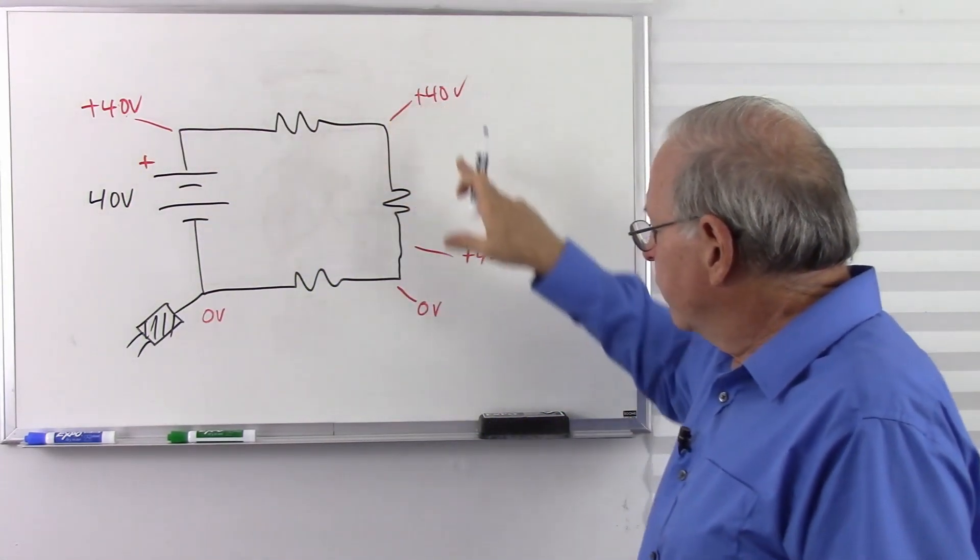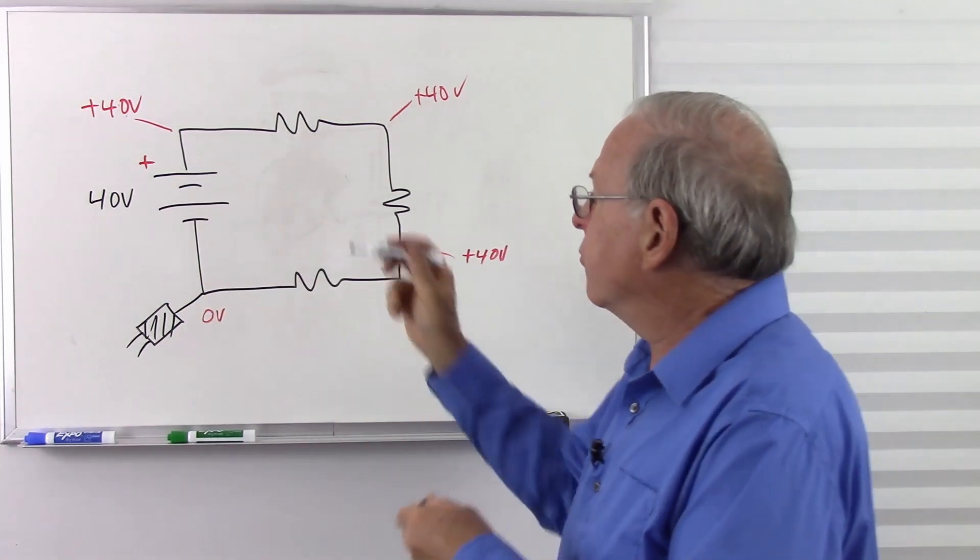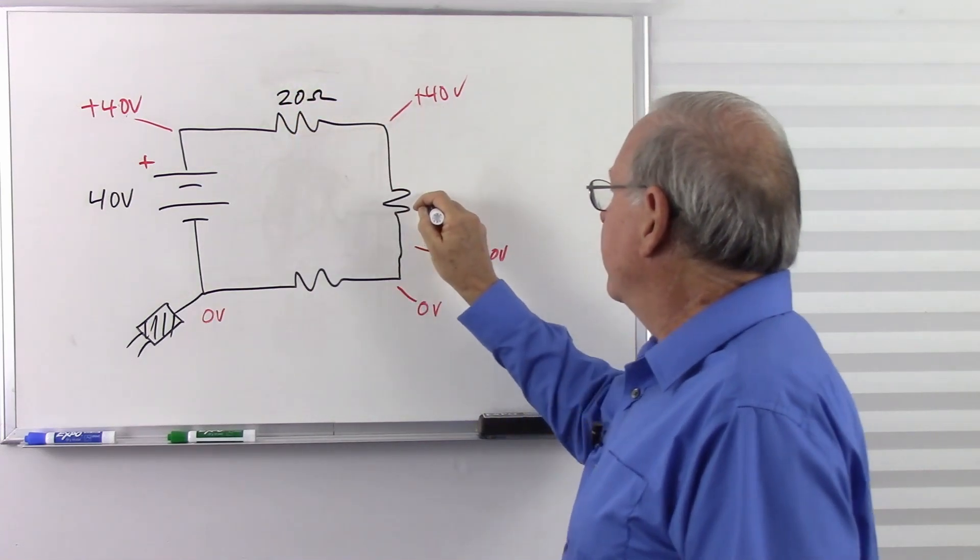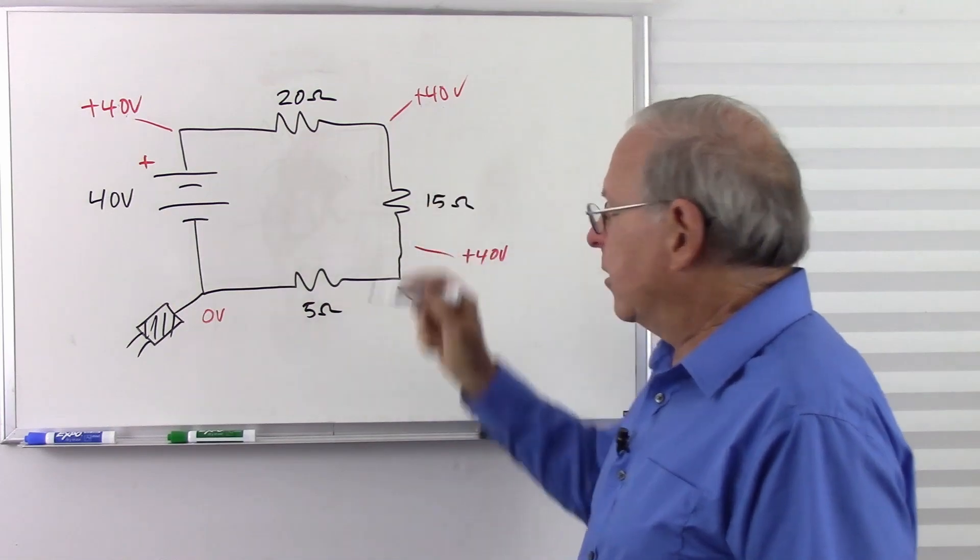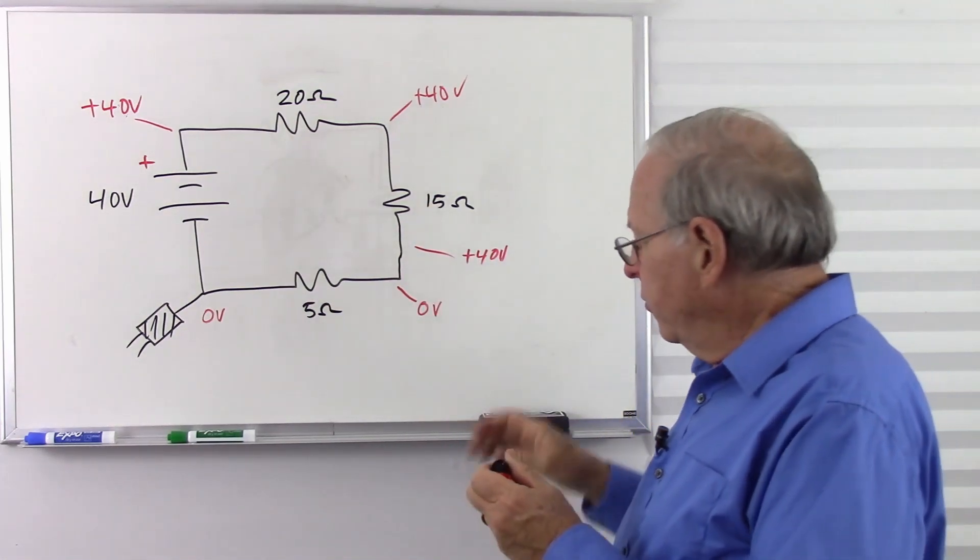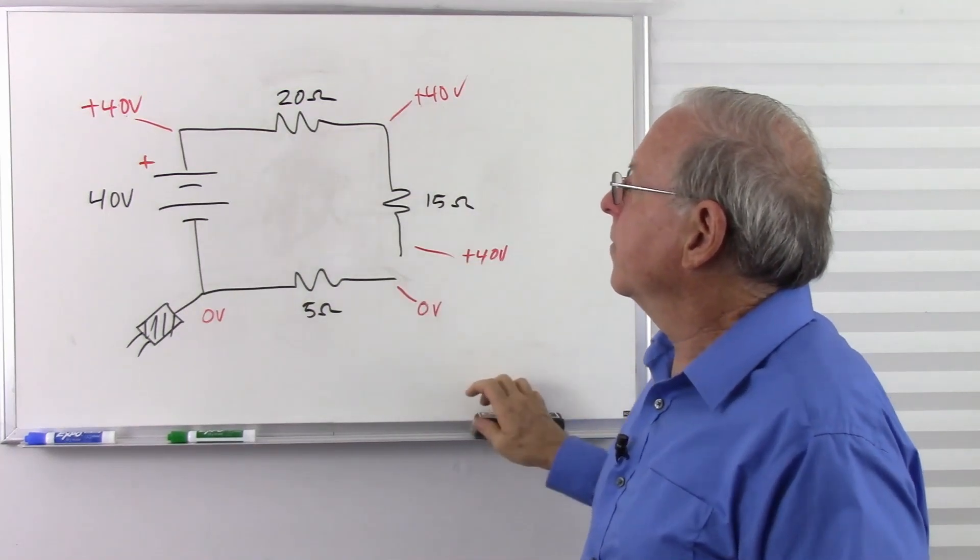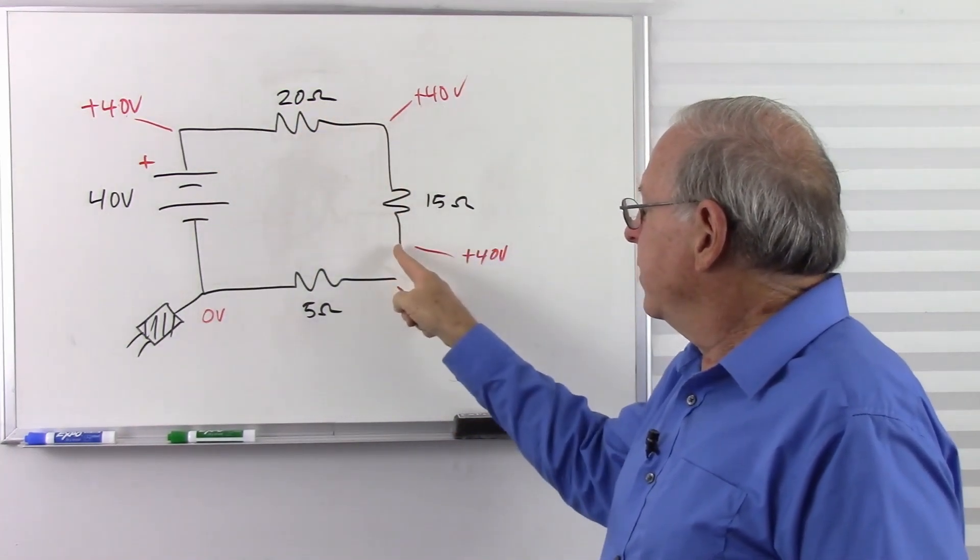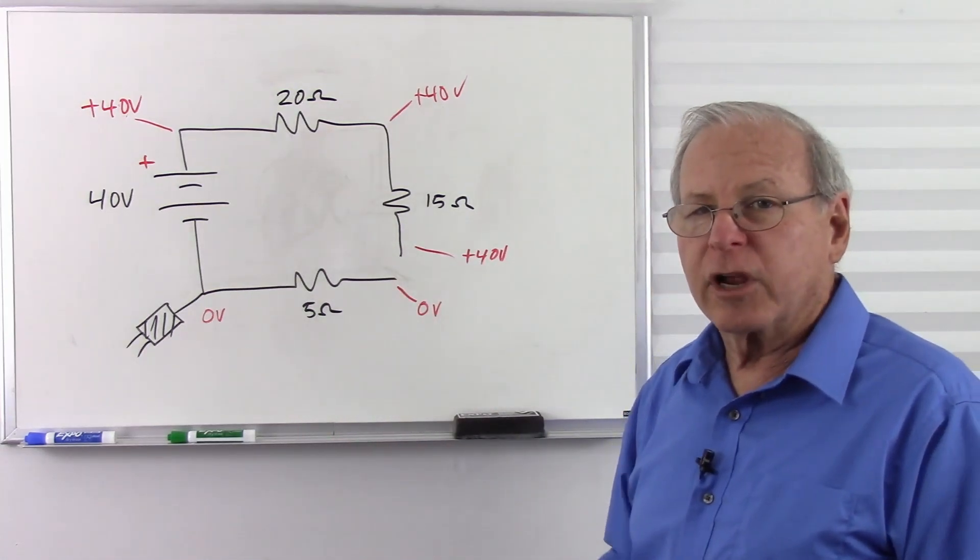40 volts, 20 volts, 5 volts. Assuming that these resistors are 20 ohms and 15 ohms and 5 ohms, we're back to what we saw before. But as soon as we open the circuit, we're back to this. No voltage drop. All of my voltage is dropped across here. So that is the basics of an open circuit.